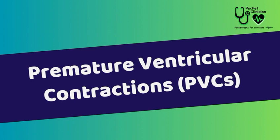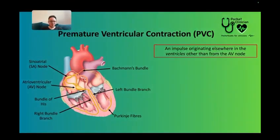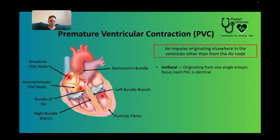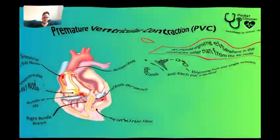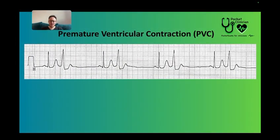Premature Ventricular Contractions, or PVCs. You'll have a normal PQRST complex that originates from the SA node. The AV node will then fire and you'll get your QRS complex as usual. But when a PVC happens, the impulse originates elsewhere than the AV node — it can be anywhere in the ventricles, just not the AV node. Looking at it on an ECG, you've got this normal PQRST complex, and then what follows it is this abnormal looking QRS complex that is earlier than expected. There's no P wave before it, like the next one here — you can see a P wave there, but there's no P wave before the PVCs.